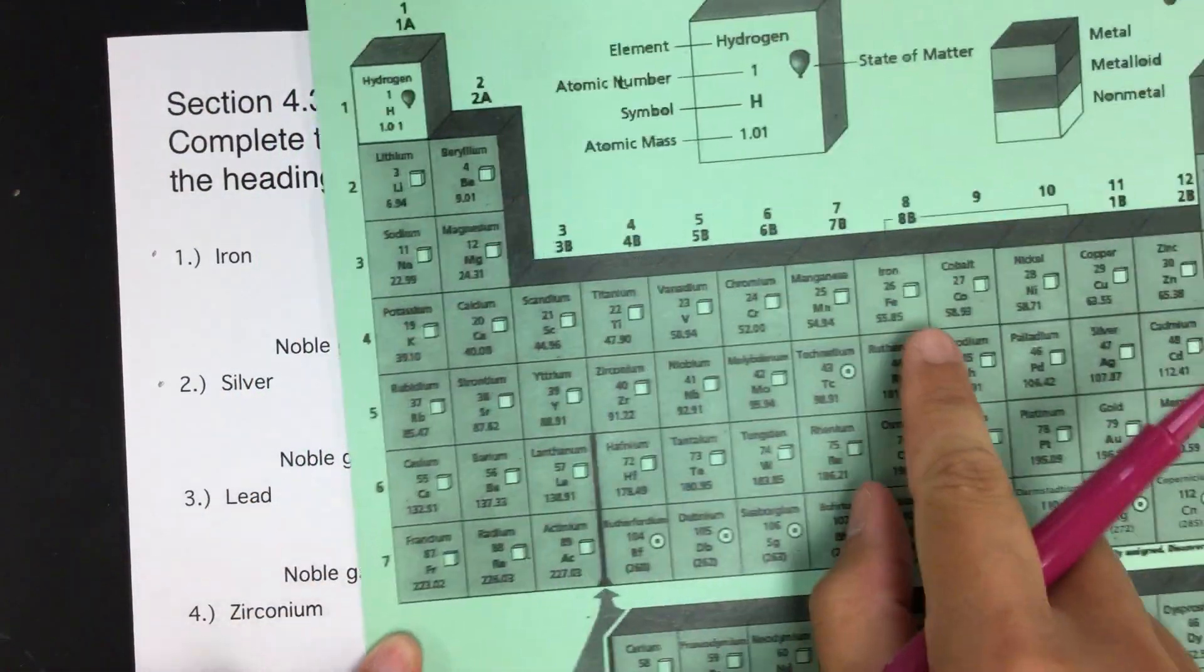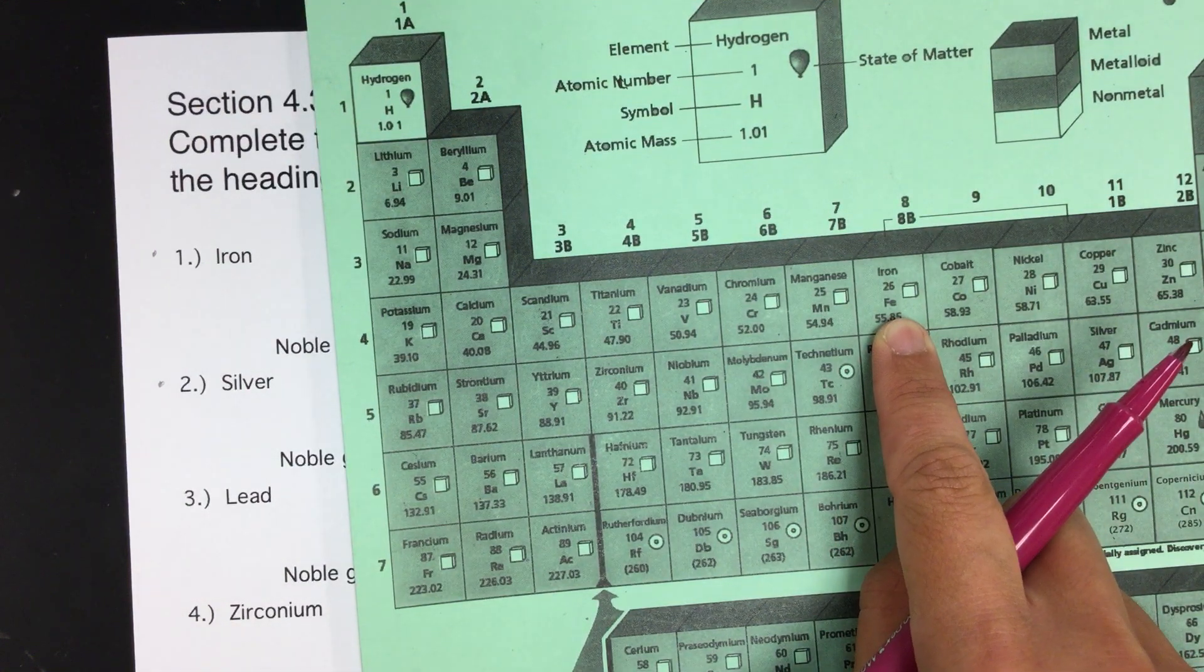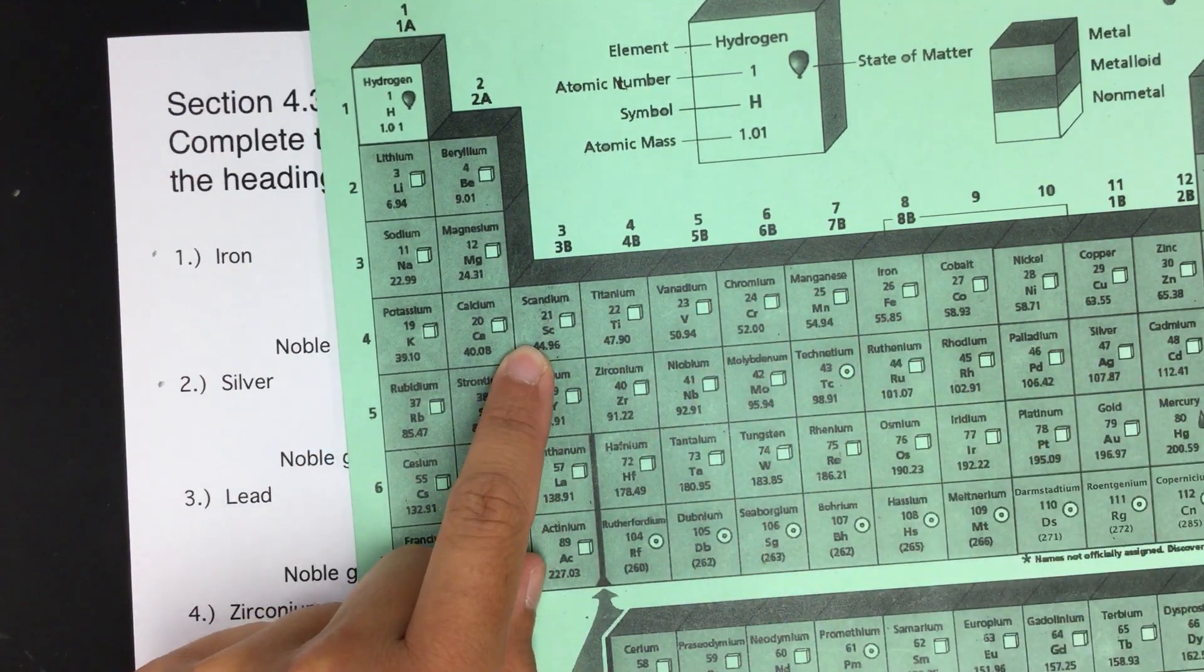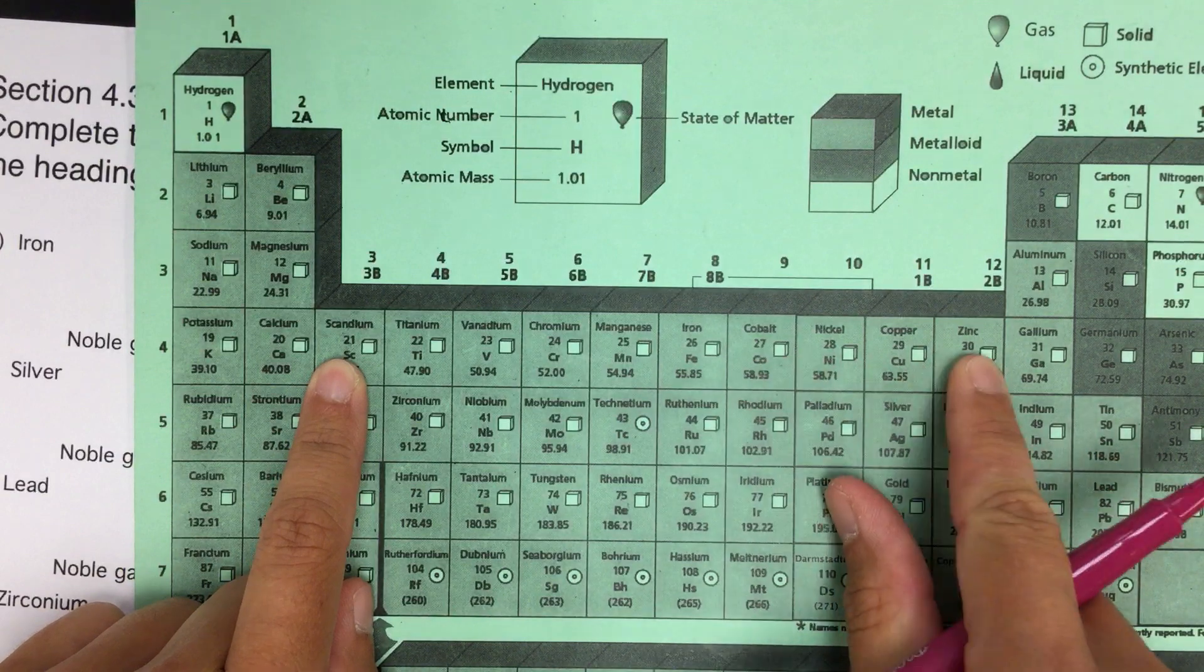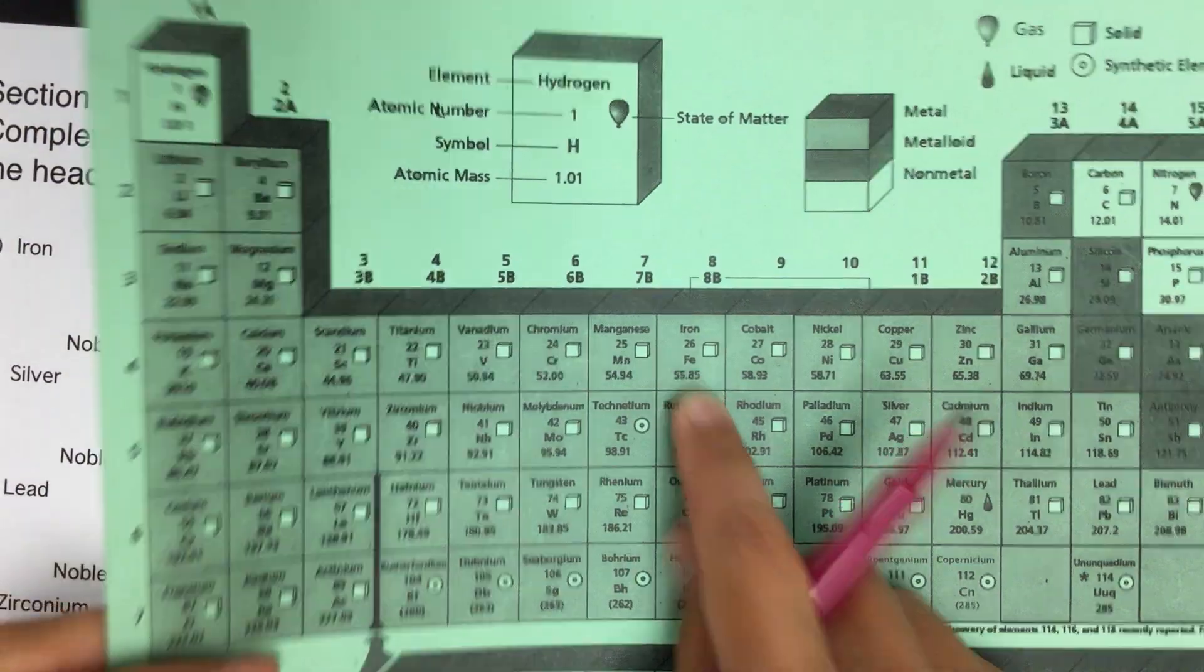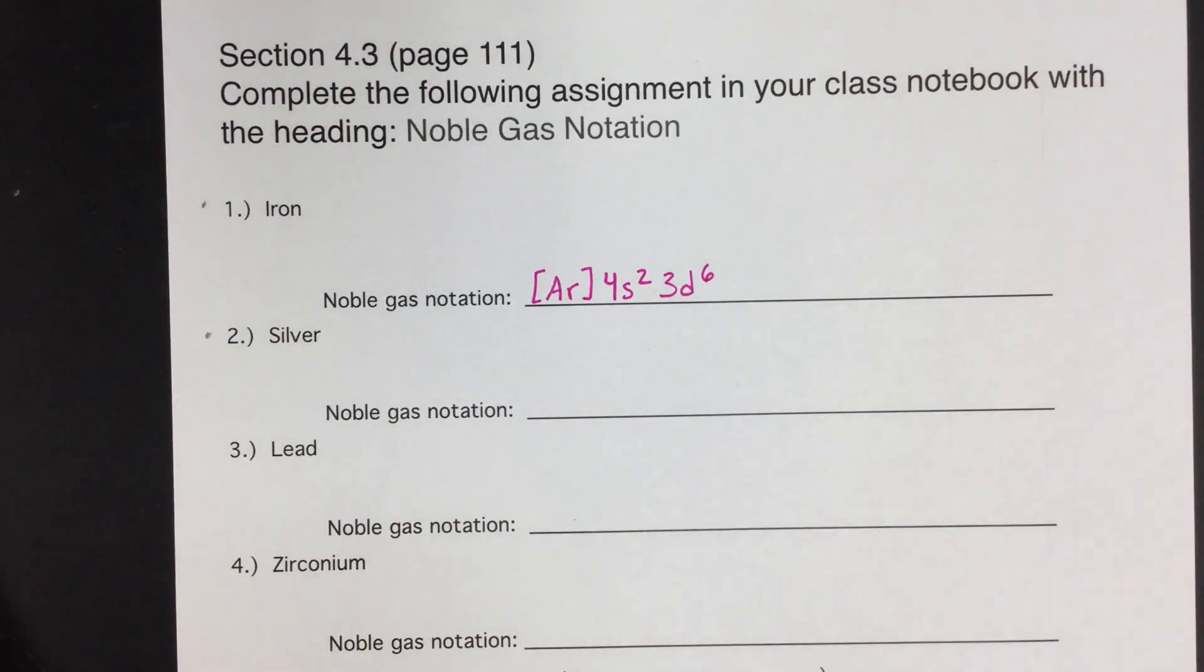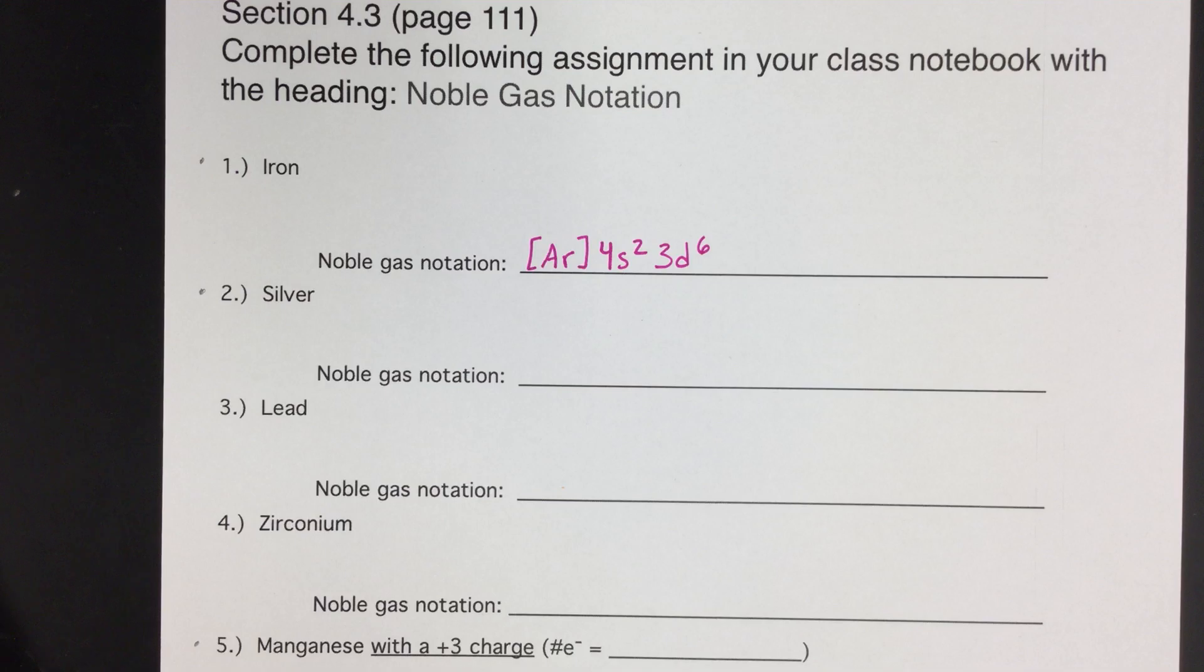And then after the 4s, so we're trying to get here, then we're in the 3d. Remember, the d block is an energy level behind this number. So this is the 3d section. And you can see that on here as well. So now we're in 3d. If it were full, it would be 3d10, but it's not. We're going to count 1, 2, 3, 4, 5, 6. So it's going to be 3d6. So that's it. Noble gas notation of iron is argon in brackets, 4s2, 3d6. Done.